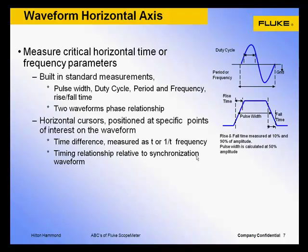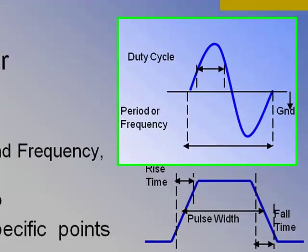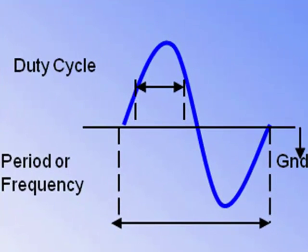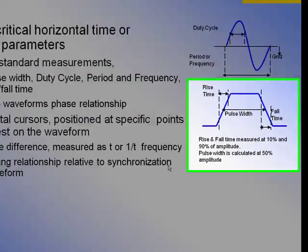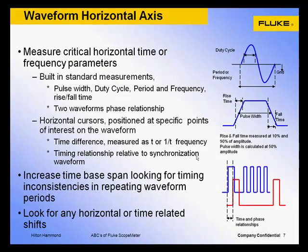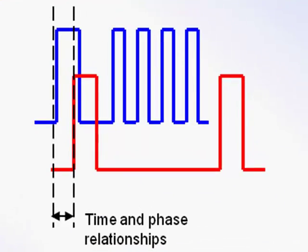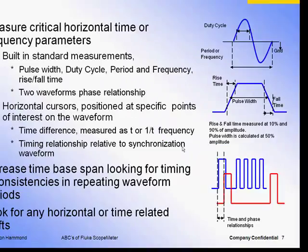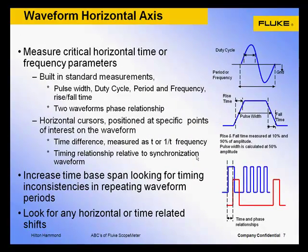Scanning the waveform's horizontal axis can be broken into the following aspects. First, measure critical time characteristics using either built-in automatic measurements or horizontal cursors. Increase the time-based setting to zoom out of the waveform, looking for any inconsistencies in waveform periods from one period to the next. Differences in logic pulses could indicate logic circuit timing issues. Zoom back in by decreasing the time-based setting and look for any horizontal or time-related shift. Any sign of signal jitter or phasing could indicate instability in a digital circuit's reference clock or logic components.